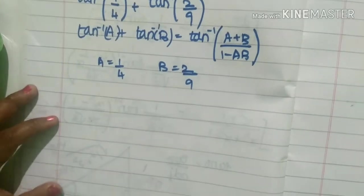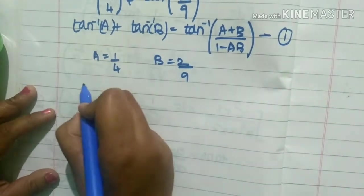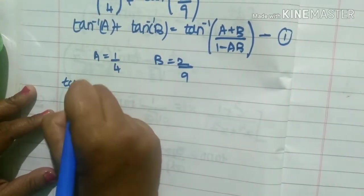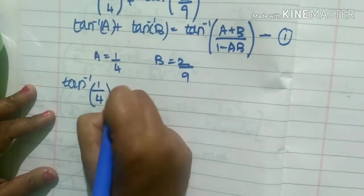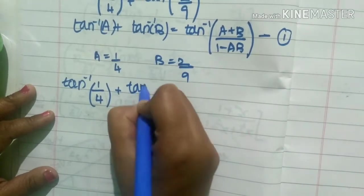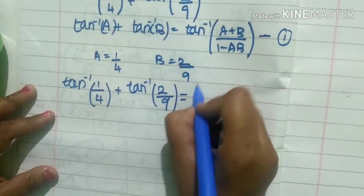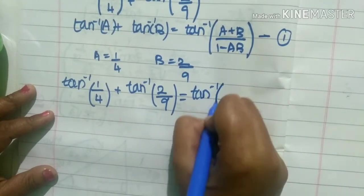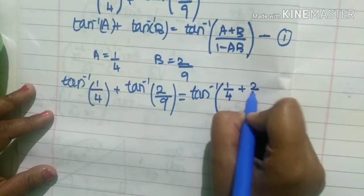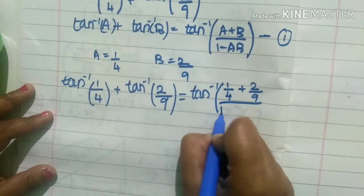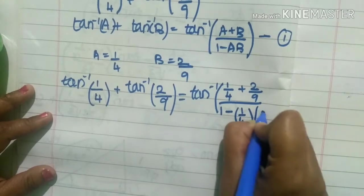Now we substitute the values of a and b in this equation. So tan inverse of 1 by 4 plus tan inverse of 2 by 9 is equal to tan inverse of a plus b, where a is 1 by 4 plus b is 2 by 9, divided by 1 minus ab, where a is 1 by 4 and b is 2 by 9.